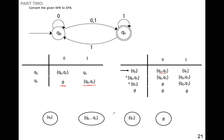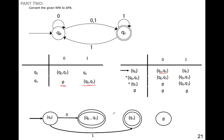Here we have my states: Q0, Q0Q1, Q1, and phi — with initial state, final states, and the transitions. For 0 and 1, Q0 goes to Q0Q1. Q0Q1 processing 0 and 1 remains in the same place. Q1 by 0 goes to phi and by 1 goes to Q0Q1. Finally, phi processing 0 and 1 remains in its same place.